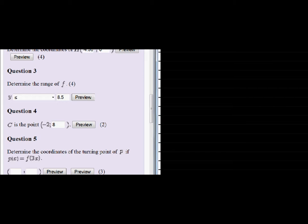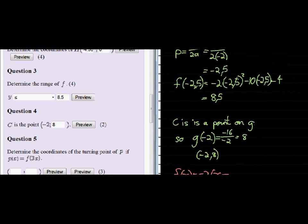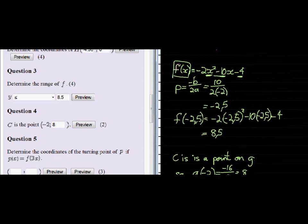So remember we have F(x) and we had already found the P value. A was negative 2. The P value is X was the symmetry line. We can go up to find that. Here we go.